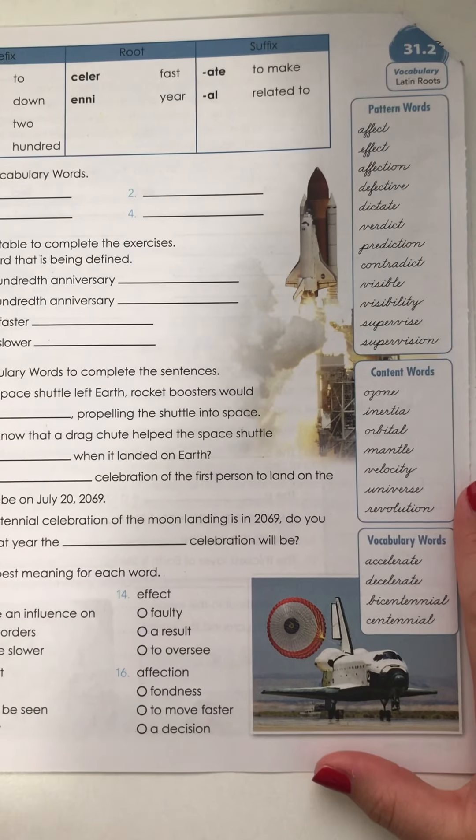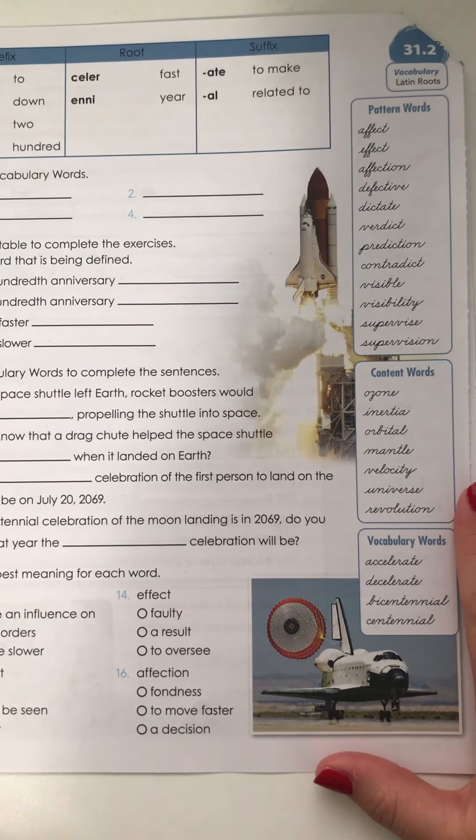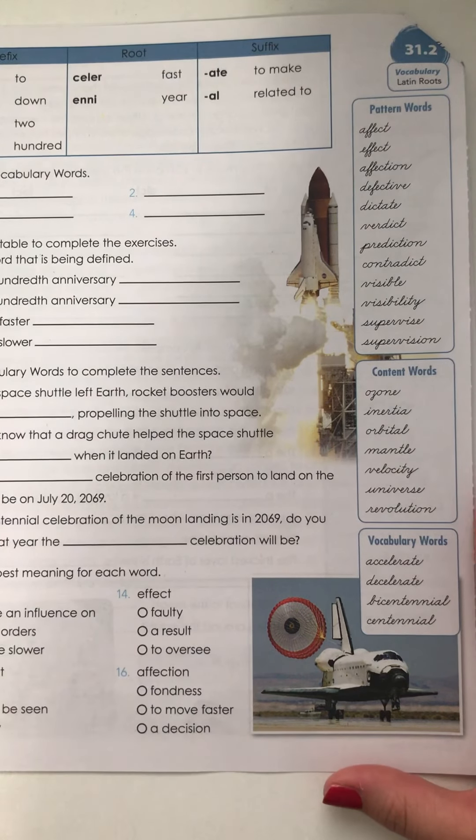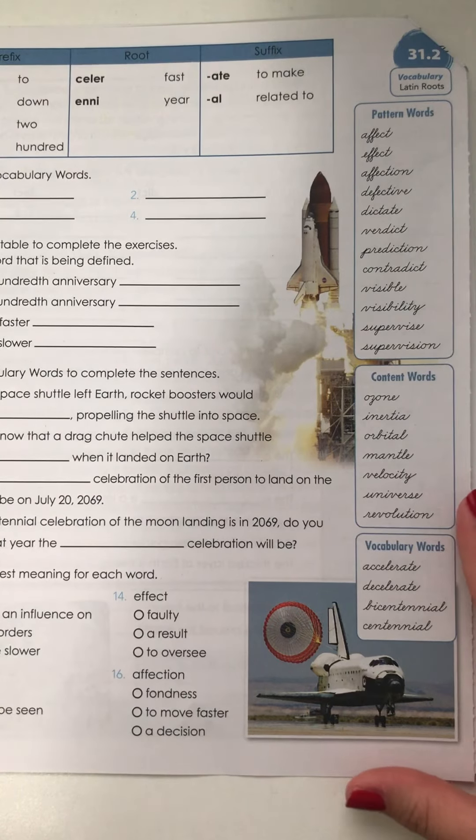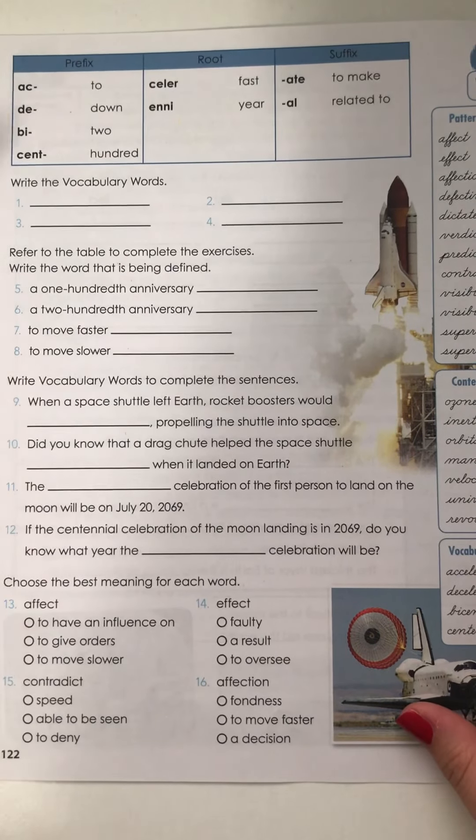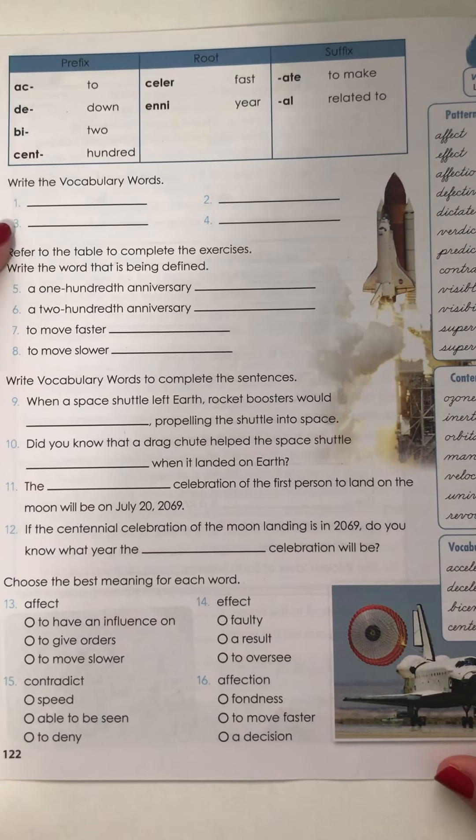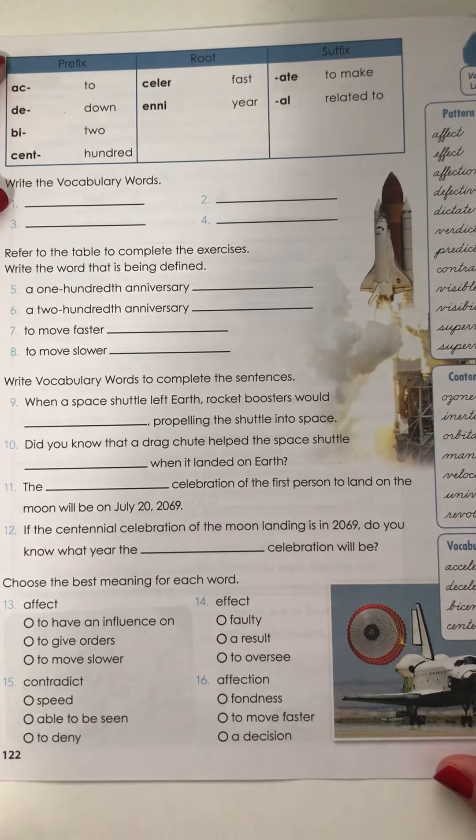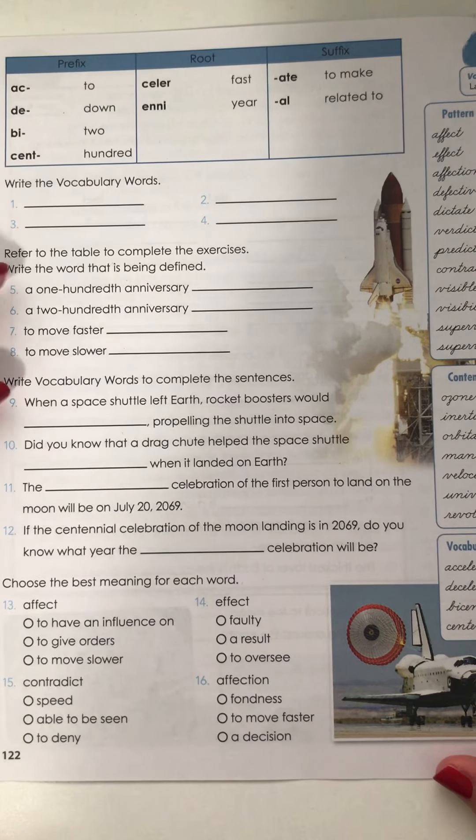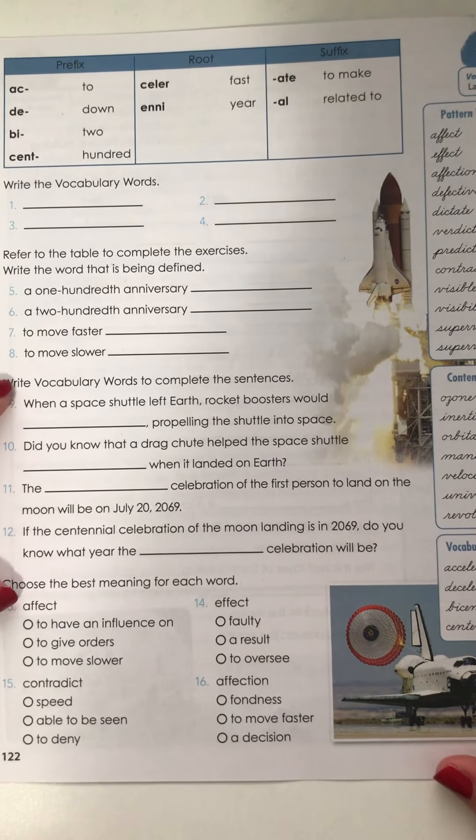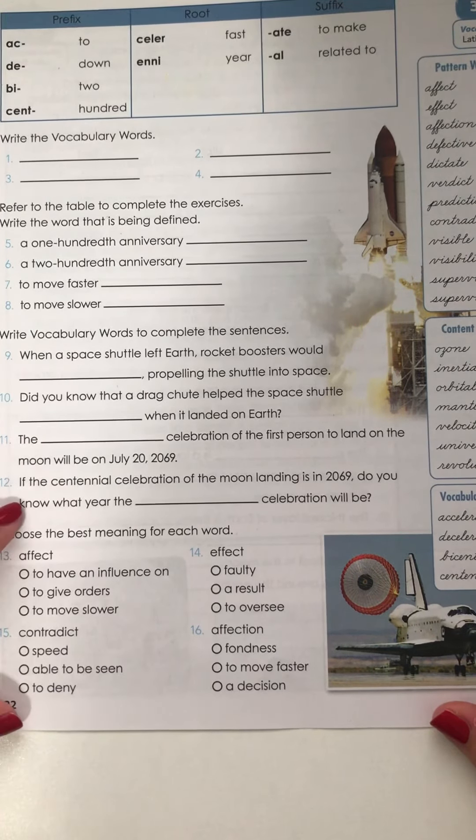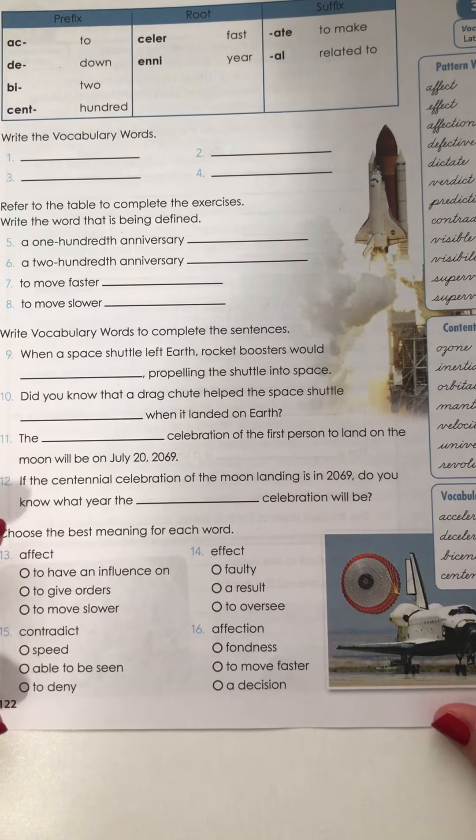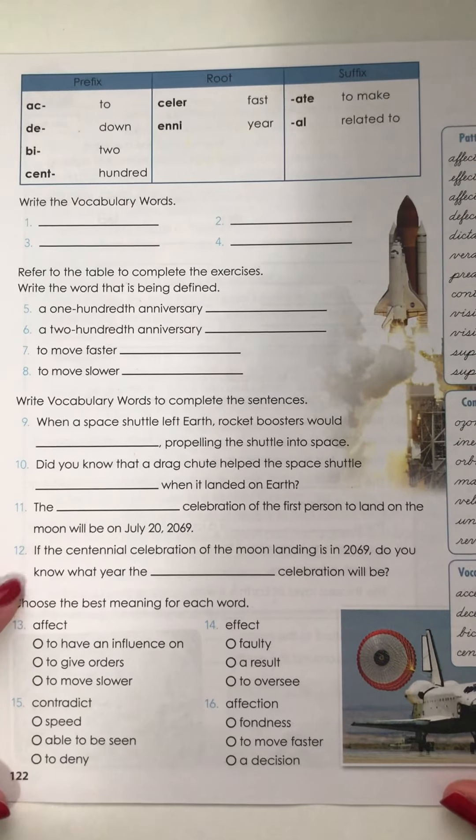So here for Wednesday, we have our vocabulary word exercise. Our vocabulary words, again, are accelerate, decelerate, bicentennial, and centennial. And by now, you should have written those down and written the definitions from the spelling dictionary so that this exercise can be easier for you. It is the same as usual. Writing them, referring to the table on top or your spelling dictionary to sort the meaning. Write the vocabulary word to complete the sentences, and then use the multiple choice here for the last four, again, based on its meaning.